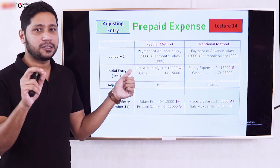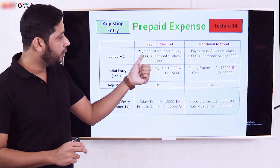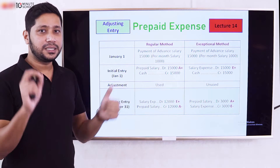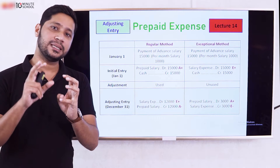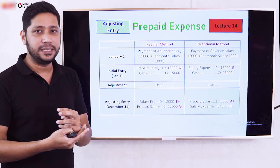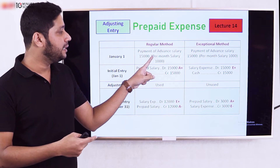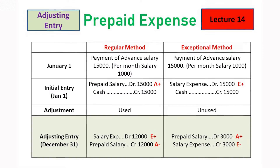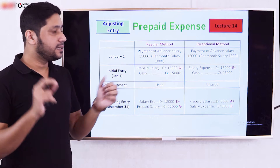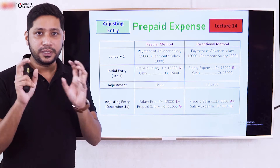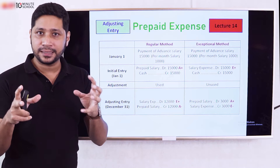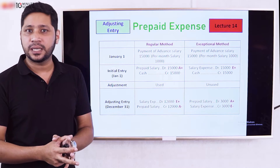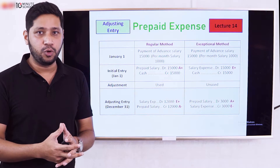Let's start with a January 1st transaction. The payment of advance salary is $15,000 on January 1st, and we have information that the monthly salary is $1,000. In the general journal we record the initial entry.